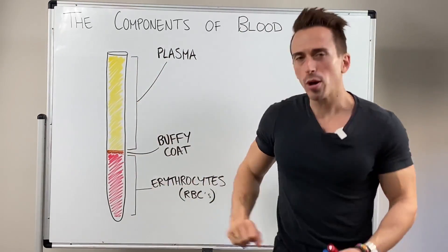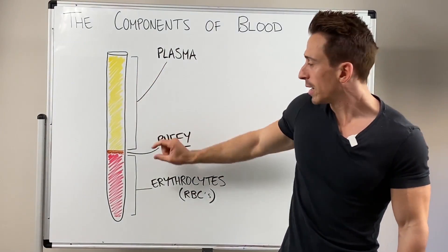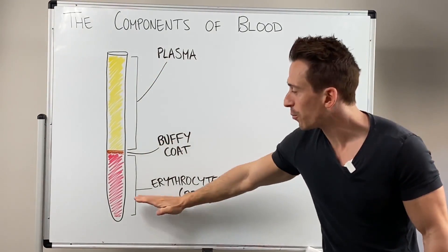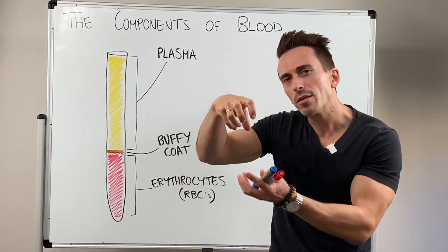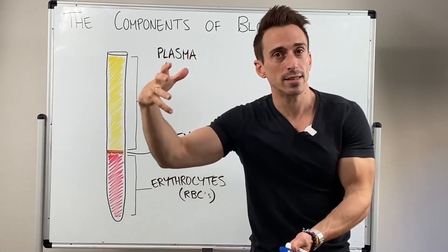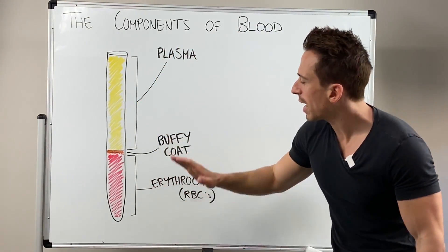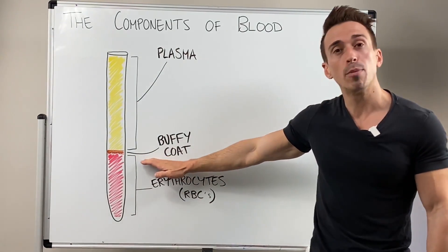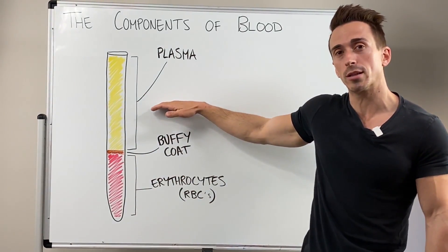Going from top to bottom, these three layers include the blood plasma, the buffy coat, and the red blood cells. They separate themselves out according to their density, how heavy they are. So obviously the heavy red blood cells at the bottom, then the lighter components here, and then the lightest components at the top.